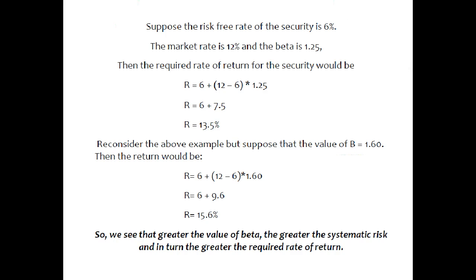For example, if the risk-free rate is 6%, the market rate is 12%, and beta is 1.25, then the required rate of return is: R = 6 + (12 − 6) × 1.25 = 13.5%. If the beta is instead 1.60, then the return would be 15.6%. So the greater the value of beta, the greater the systematic risk, and in turn the greater the required rate of return.